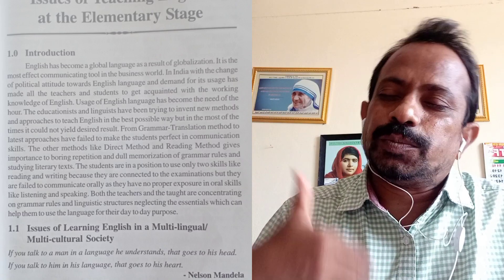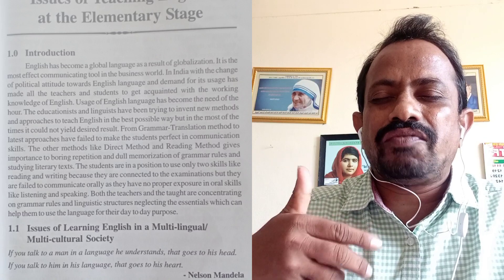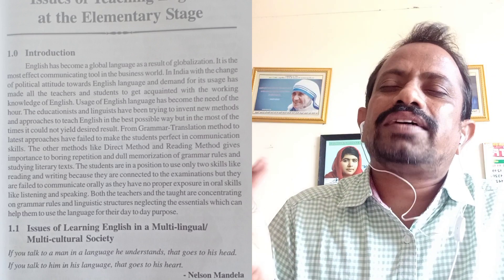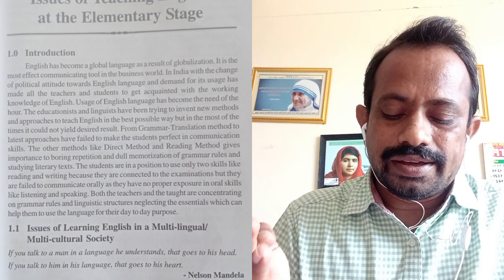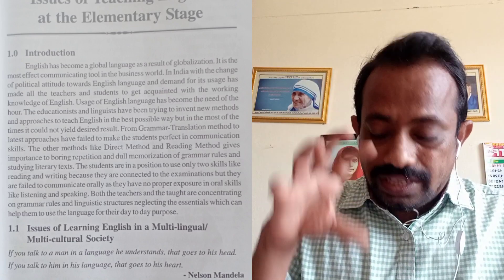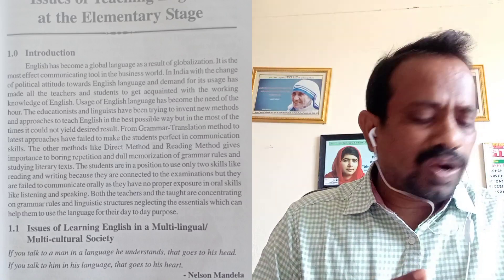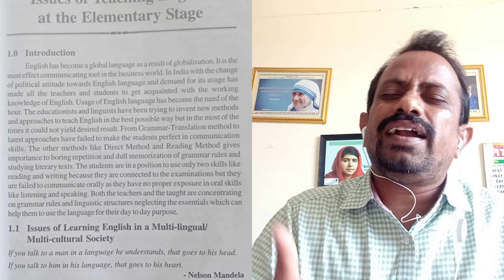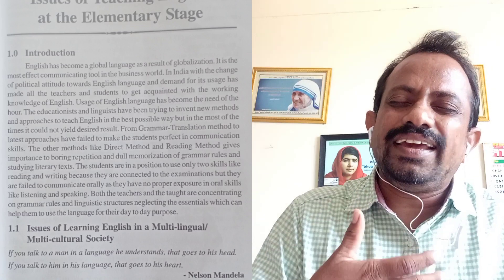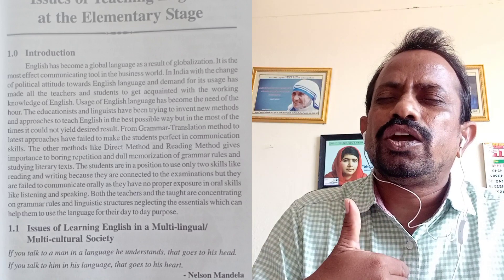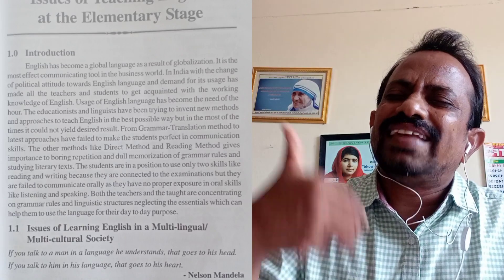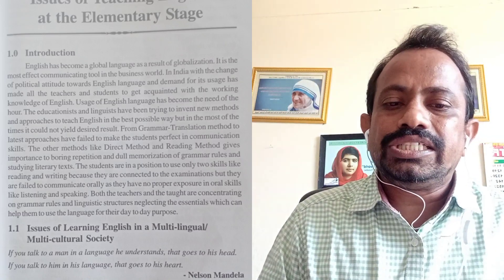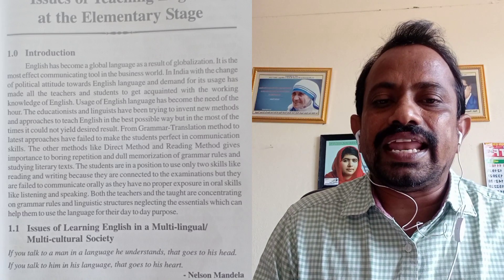Listening is one skill and speaking is one skill. Actually in English, we have four skills, called LSRW — listening, speaking, reading, and writing. As a teacher or trainee student, our concentration is on learning the skill of listening and speaking. After getting those skills, our duty is to make the learners use the language in their day-to-day life. This is the introduction of the first chapter: Issues of Teaching English at the Elementary Stage.